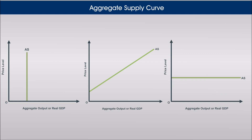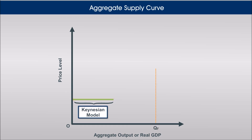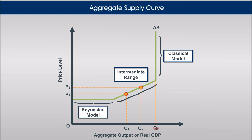Which of these models is correct? At some point in time, each of these viewpoints has been correct — each can be seen as a smaller piece of a larger picture. At very low levels of real GDP, where there are a lot of unused resources, we use the Keynesian model. At full employment, when the economy is operating at full potential, we see the classical model. In the middle, where price level and GDP increase in response to rising aggregate demand, the economy is in the intermediate range.